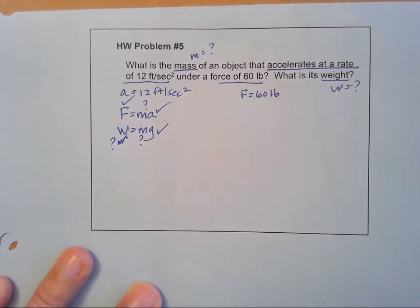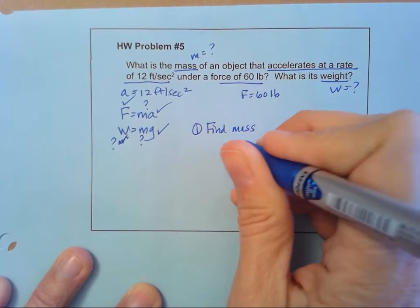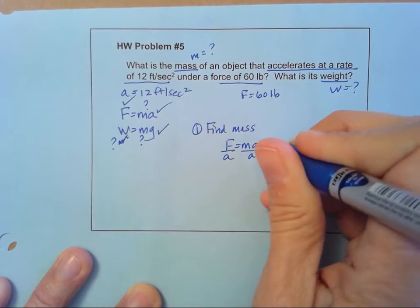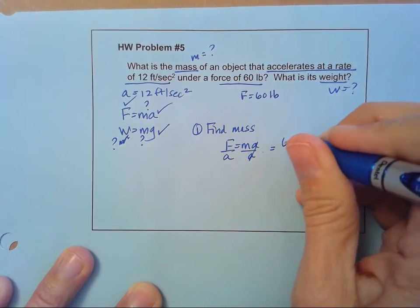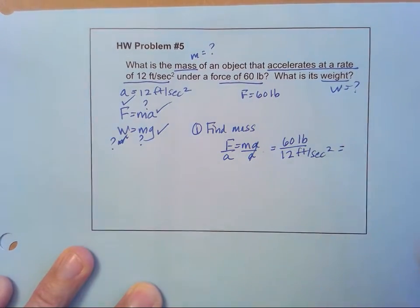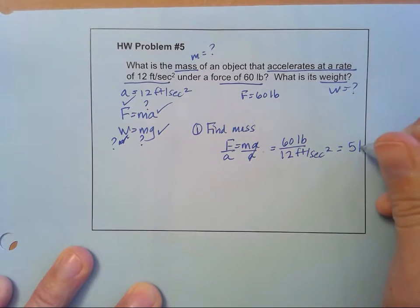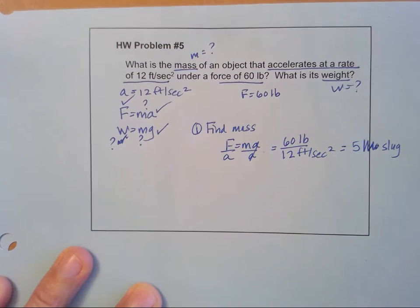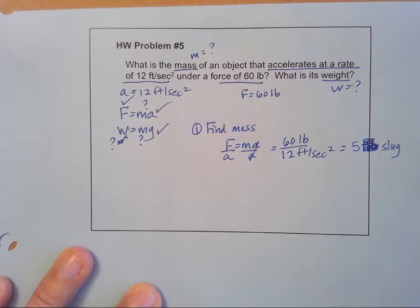So let's go ahead and start with that first. We'll do first, find our mass, and we'll say F equals MA, and then we'll divide by A on both sides, and we get M equals F over A. In this case, our force is 60 pounds, and our A is 12 feet per second squared. And when we go ahead and do that math, we get five slugs. Okay, so that's our first step. We're going to find the mass.